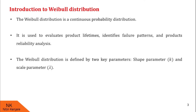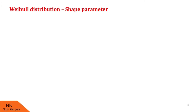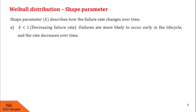First, we see the shape parameter. Shape parameter describes how the failure rate changes over time. We denote the shape parameter by k. If k is less than 1, then the failure rate is decreasing. It indicates failures are more likely to occur early in the life cycle and the rate decreases over time.